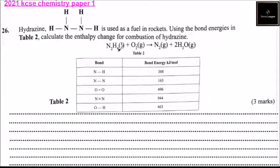So we have been given the equation: hydrazine combined with oxygen gas forms nitrogen and water vapor. We have been given bond energies in the table. For example, the N-H bond energy is 388 kilojoules per mole, and the others are also given. By calculating, you get three marks.